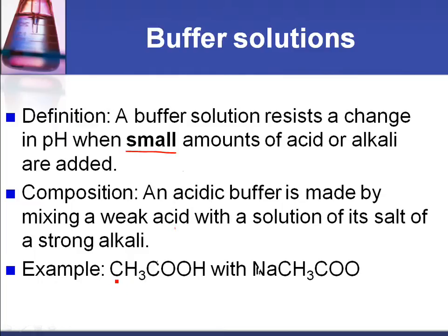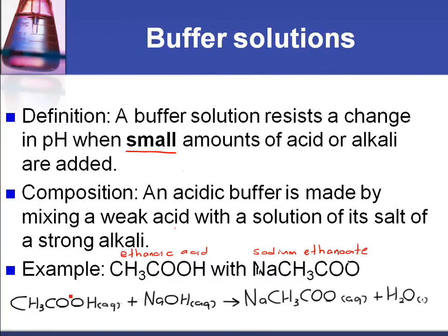So let's look at an example here. We've got CH₃COOH which is ethanoic acid — it's a weak acid. And we've got the salt, sodium ethanoate. So we reacted ethanoic acid, which is a weak acid, with sodium hydroxide, which is a strong base, and we've made a salt — sodium ethanoate — and water. So our buffer solution is going to contain the weak acid and the salt of the weak acid with a strong base.